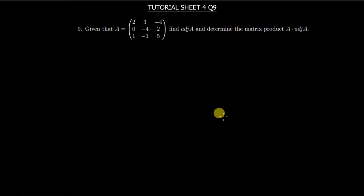Hi everyone, this is tutorial sheet 4, question 9. The question says: given that A is equal to that matrix, find the adjoint of A and determine the matrix product of A and its adjoint. To find the adjoint of A, you first have to find what we call the minors of A.